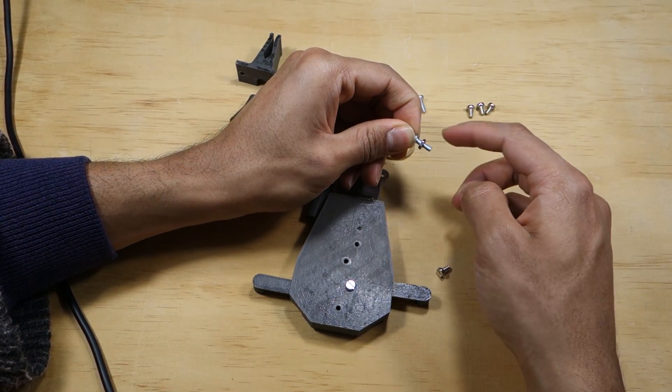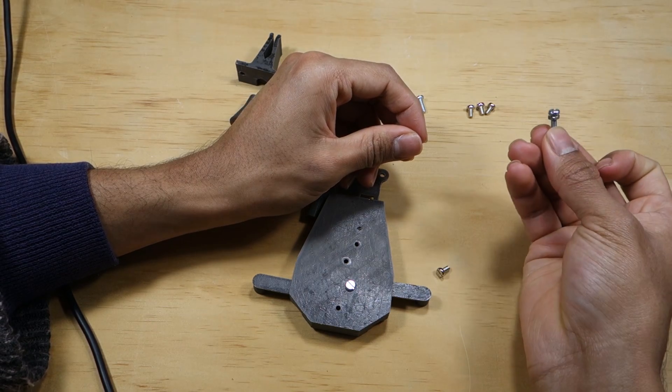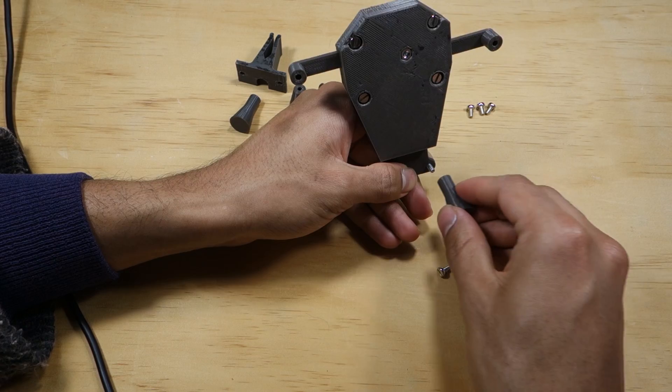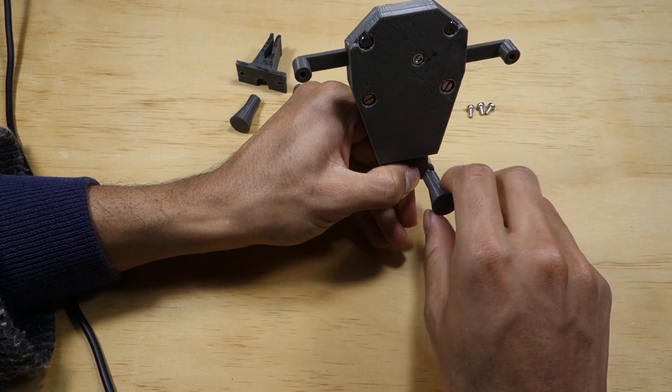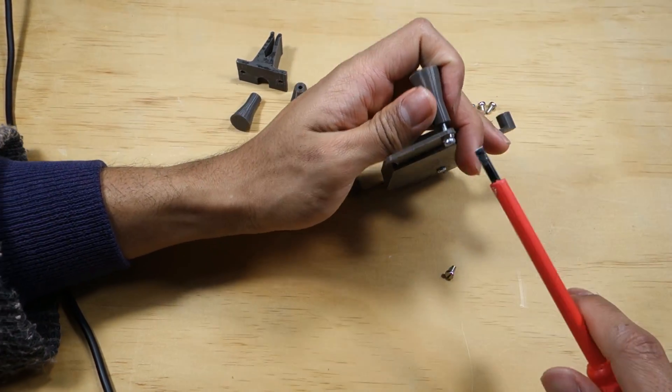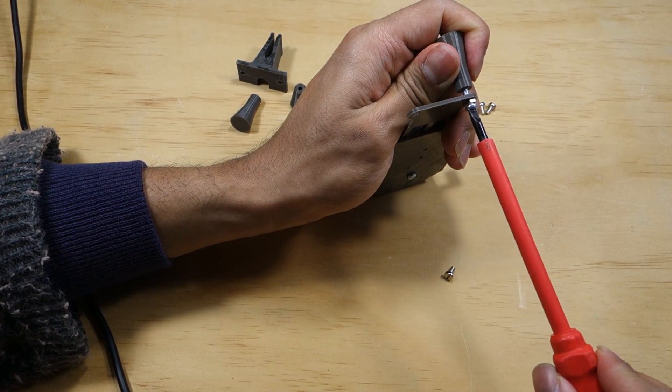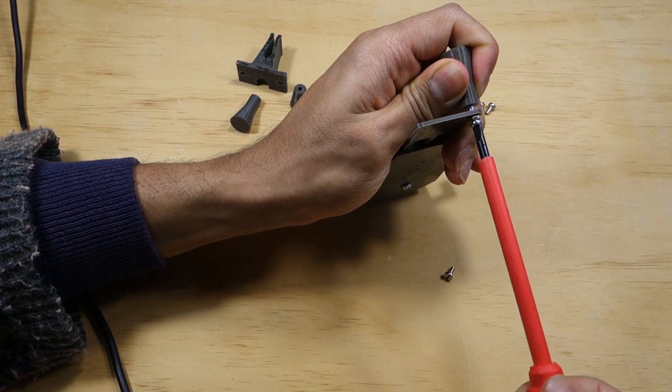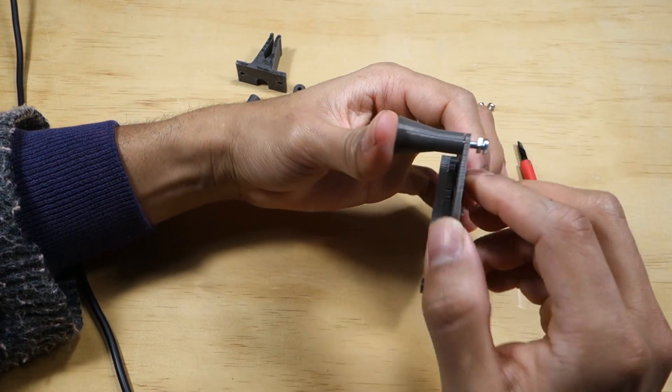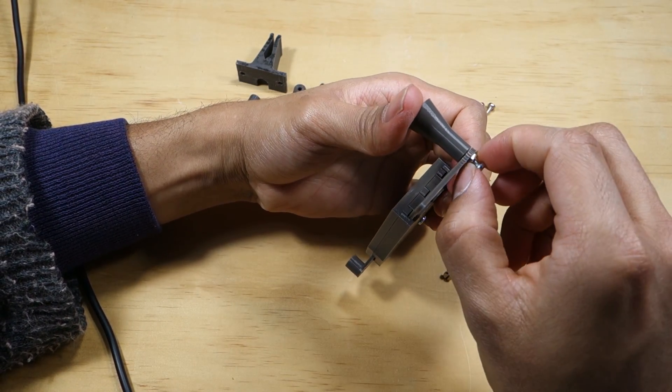Take a 10mm M3 screw and thread it through an M3 nut. Using this assembly, screw one of the longer conical posts into the lower rack as shown. Make sure to screw this into the left as shown. The screw will not go in all the way. Go as far as you can. After that, tighten down the nut to secure everything.